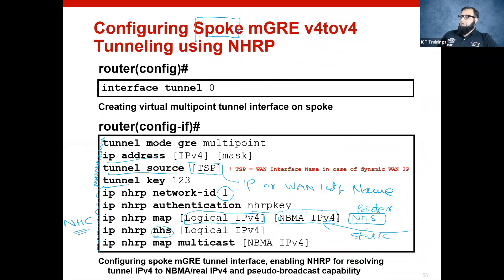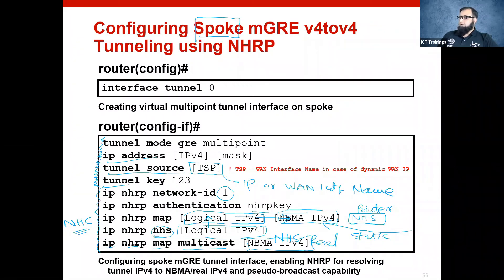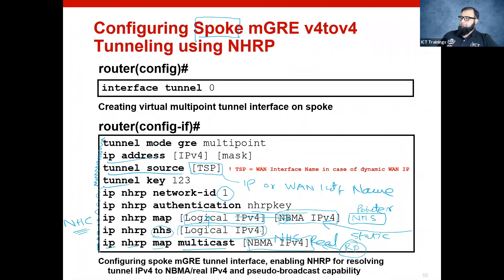Then we define that our NHS is sitting on a logical IP, and this is the same logical IP that gets translated to the real IP, so that we can initially at least talk to our NHS. And the command: IP NHRP map multicast followed by the NHS IP - this means we want to relay all of our multicast traffic to the hub so that hub can take care of it. Multicast is usually used for routing protocols, and we need to run a routing protocol on MGRE, so this command is important from that point of view.